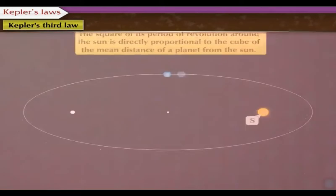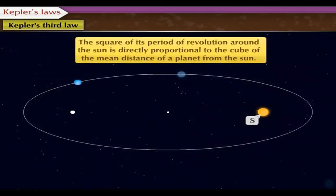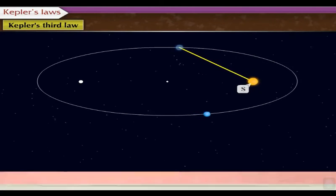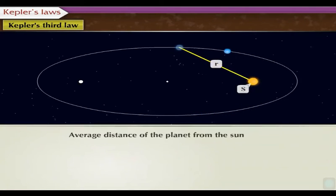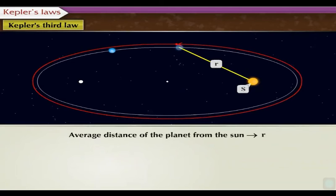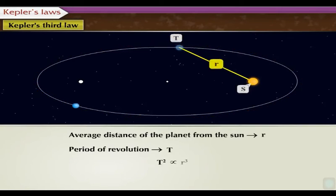Kepler's third law: The square of its period of revolution around the sun is directly proportional to the cube of the mean distance of a planet from the sun. Thus, if R is the average distance of the planet from the sun and T is its period of revolution, then T square is directly proportional to R cube.